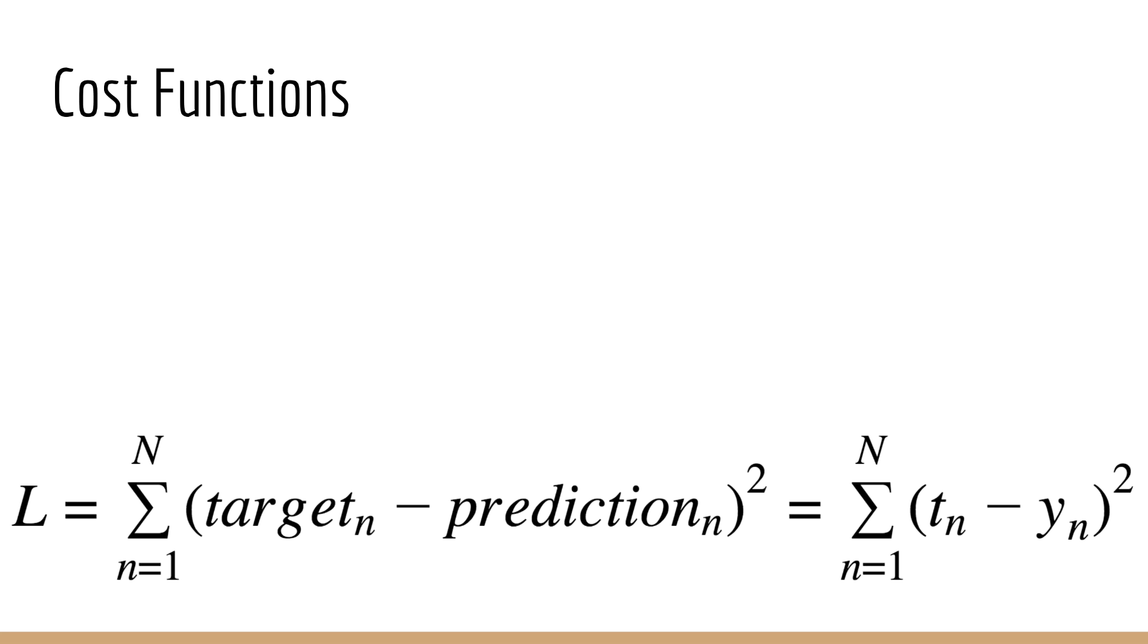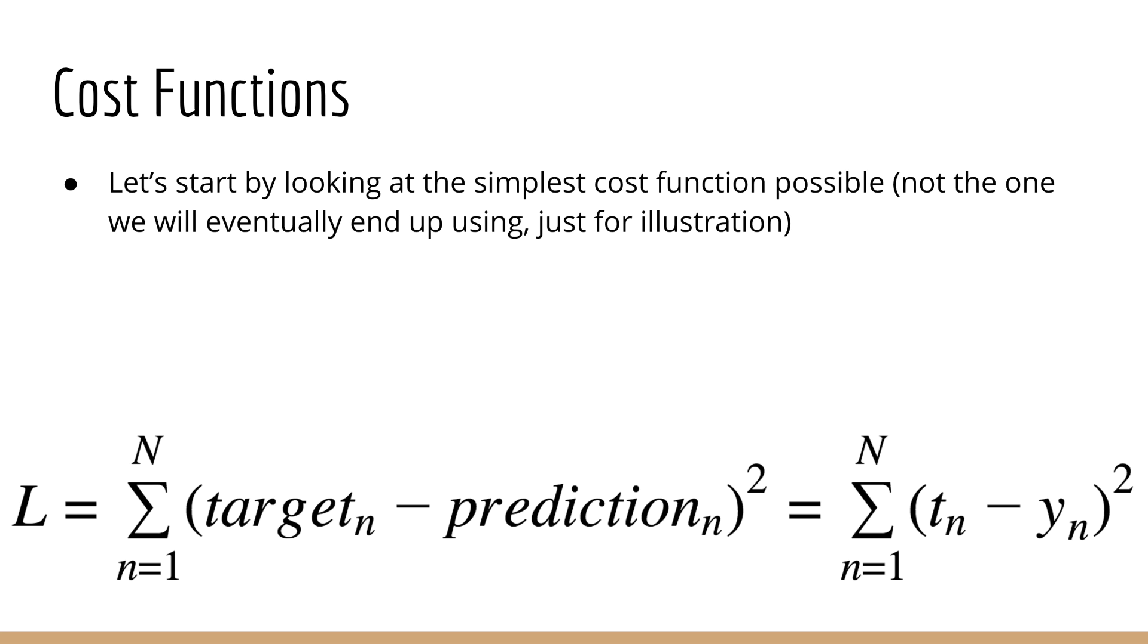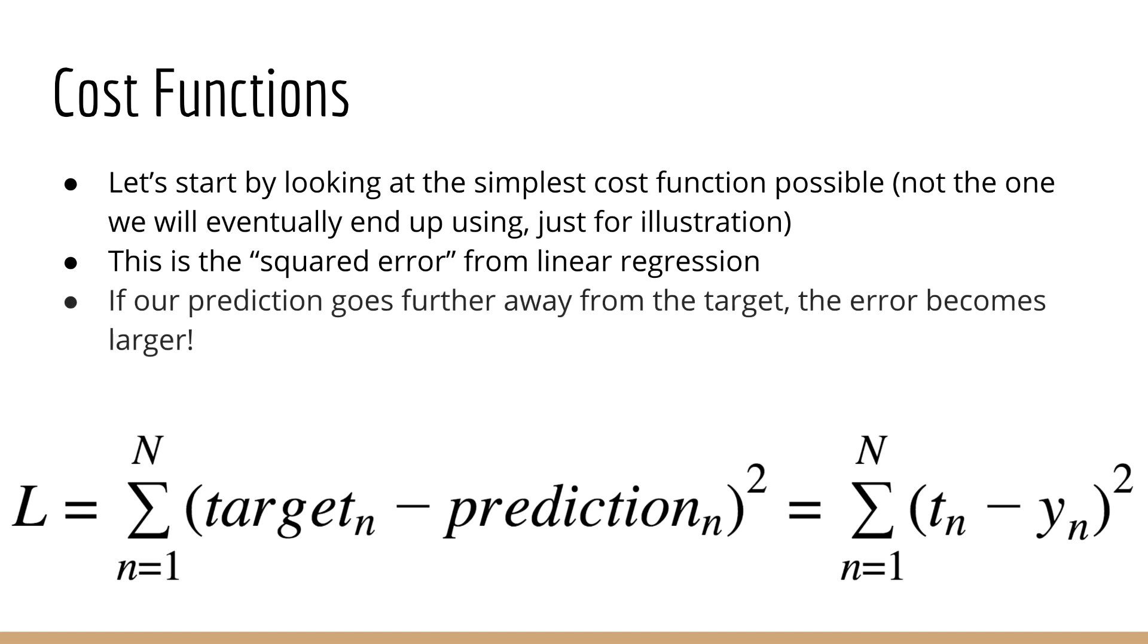Let's start by recalling the simplest cost function possible, the squared error, which you should all recognize from linear regression. It is clear from this expression that the more different the prediction is compared to the target, the larger our error will be. Thus, it makes sense to want to minimize this error in order to train our model.